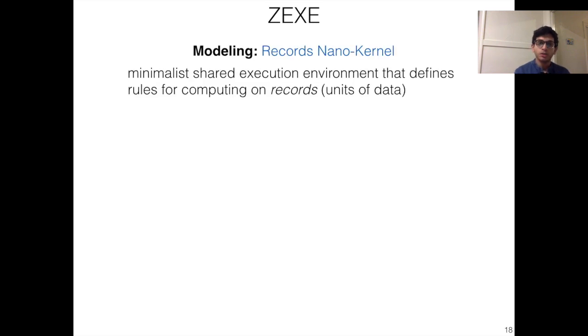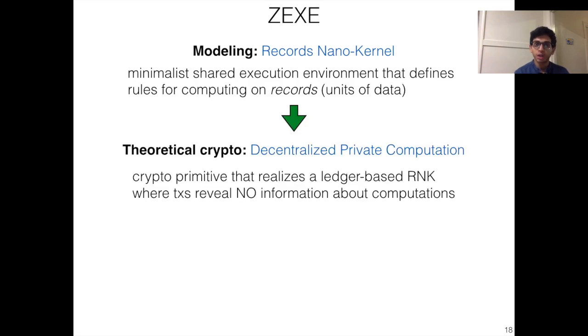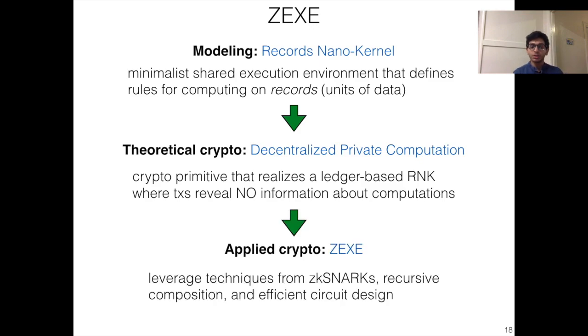Okay, so to conclude, in this talk I presented Zexy. We saw how we can use birth predicates and death predicates to model computation over these data records. In the paper, we show how to realize this records nanokernel via cryptographic primitive called decentralized private computation. And finally, we also have a lot more details about our implementation, including the details about elliptic curves, but also efficient circuit design and how to best recursively compose these proofs. Thank you.